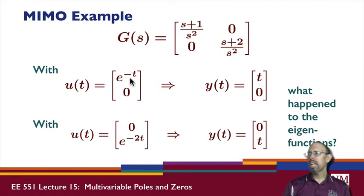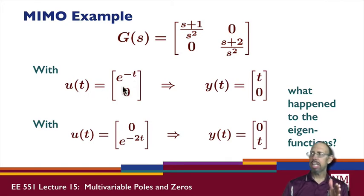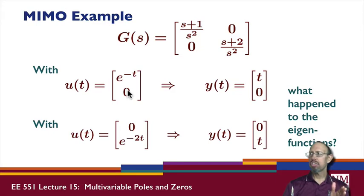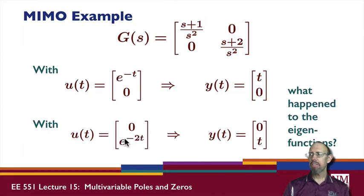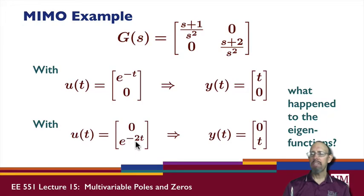A key point is that for a multi-input, multi-output system, a zero not only has a value but also a direction. When s equals minus 1, the zero has that value, but there is also a vector that provides the direction associated with the zero. Similarly, when s equals minus 2, I have not only a value but also a direction given by a vector of that form. So when working with a multivariable zero, you have not only a value of the zero but also a direction.